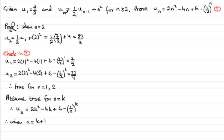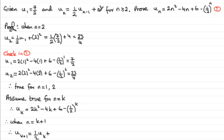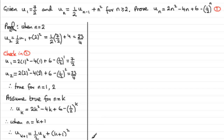We now look at the k plus 1 term. When n equals k plus 1, what is uₖ₊₁ going to equal? Using the recurrence relationship, uₖ₊₁ equals half of uₖ — the kth term — plus n squared, where n is k plus 1, so plus (k plus 1) squared.